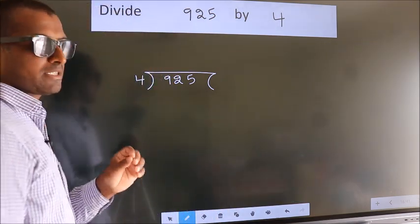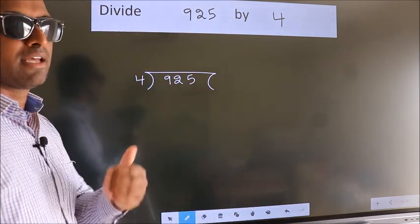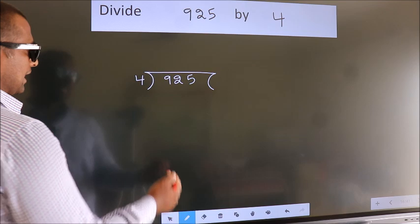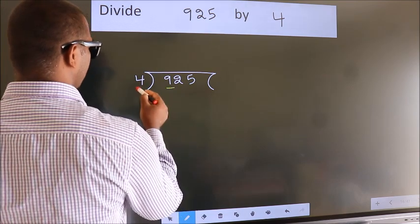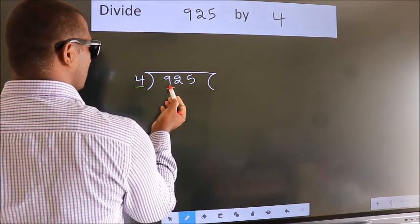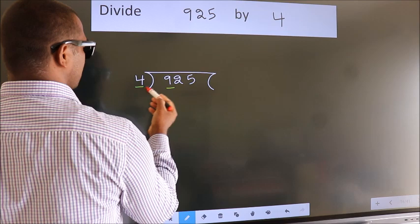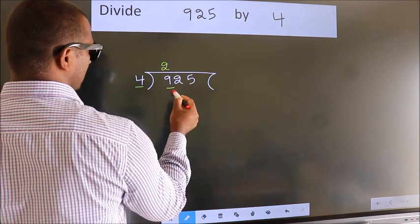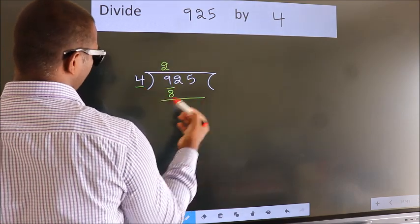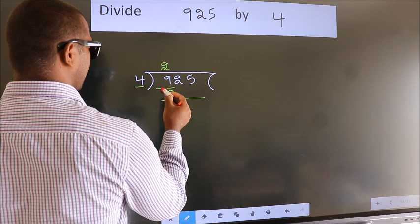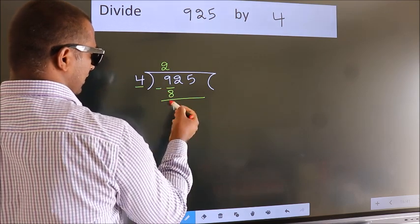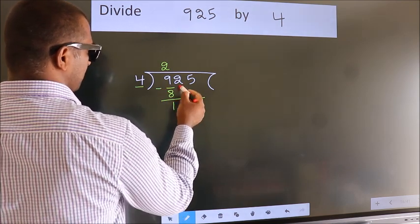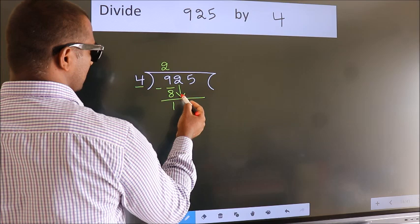This is your step 1. Next, here we have 9. 4 - a number close to 9 in the 4 table is 4 times 2 is 8. Now we should subtract, we get 1. After this, bring down the beside number, so 2 down.